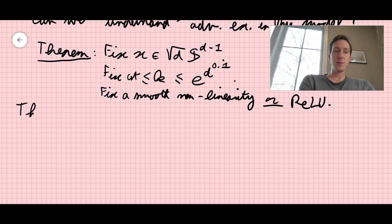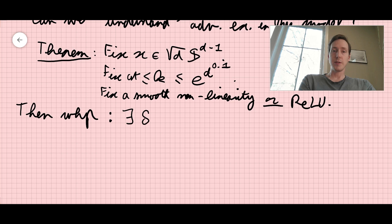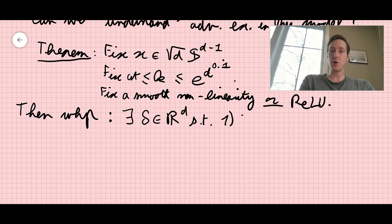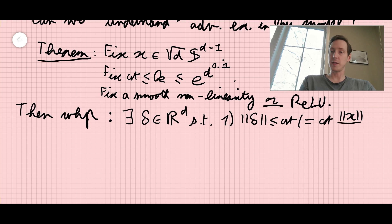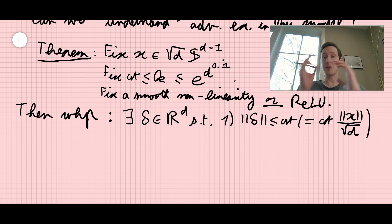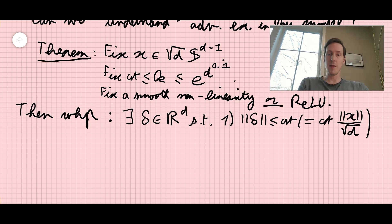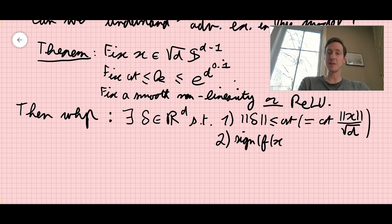Then with high probability, this model admits an adversarial example. Namely, there exists a perturbation delta in R^d such that: (1) delta is a small perturbation — the norm of delta is smaller than some constant, which is the same constant times the norm of x over sqrt(d), so it's of order norm(x)/sqrt(d); and (2) the sign of f(x + delta) is not equal to the sign of f(x). So applying this tiny perturbation actually changes the sign of the prediction.